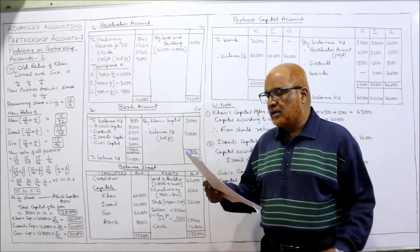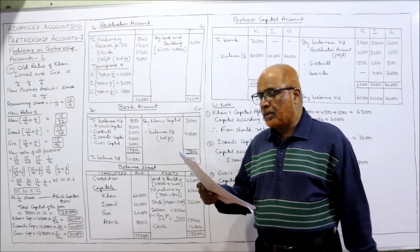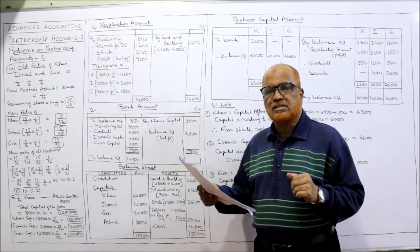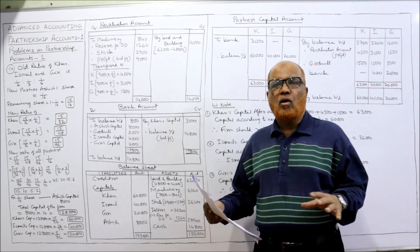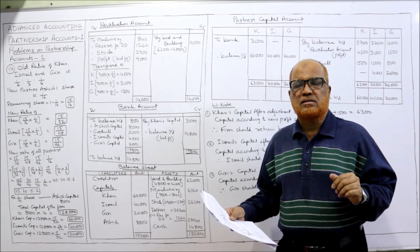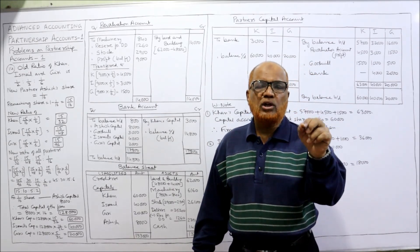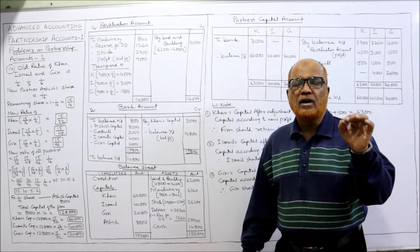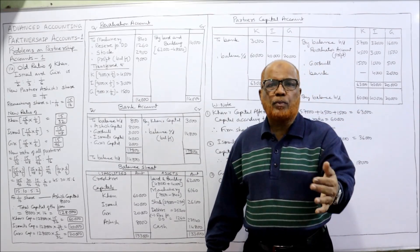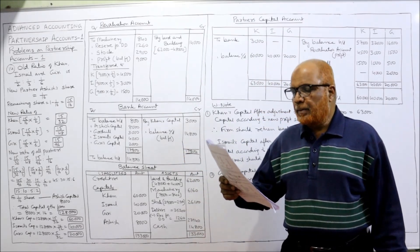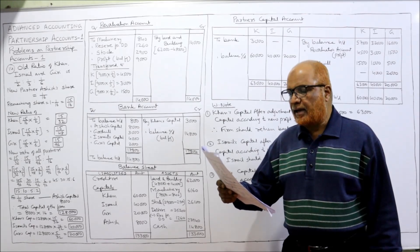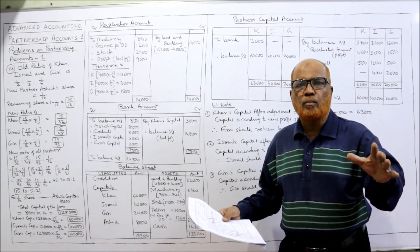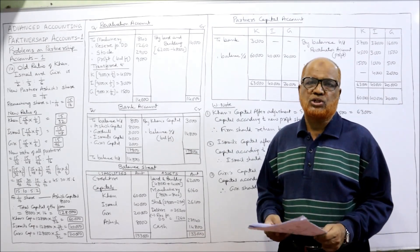After making the above adjustments, the capital of the old partners is to be adjusted according to the new profit sharing proportion — actual amounts to be brought in or paid off as the case may be. Just like the previous problem, after all adjustments we have to see whether the capital is more or less compared to the capital calculated according to the new profit sharing ratio. We must prepare the revaluation account, partners' capital account, and the new balance sheet after admission of Ashish.